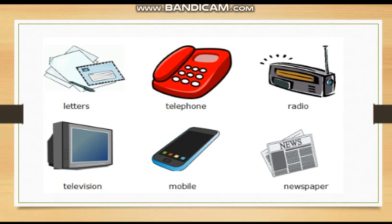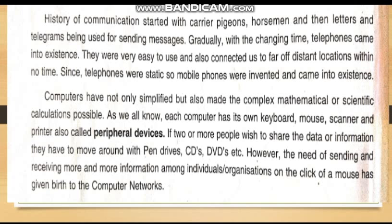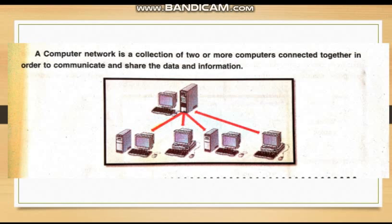all of us are connected to each other and share data and information. The history of communication started with carrier pigeon, horseman, and then letters and telegrams being used for sending messages. Gradually, with the changing time, telephone came into existence and very fast the technologies are changing. Most network communication mediums are changing. Connecting to each other is called a network, and a computer network is a collection of two or more computers connected together in order to communicate and share data and information.